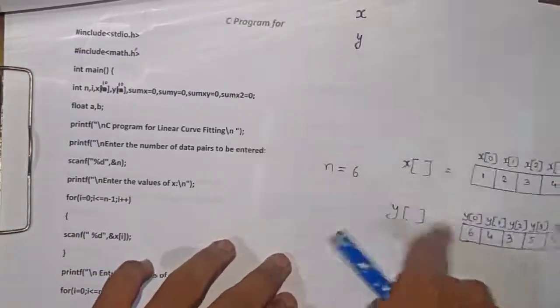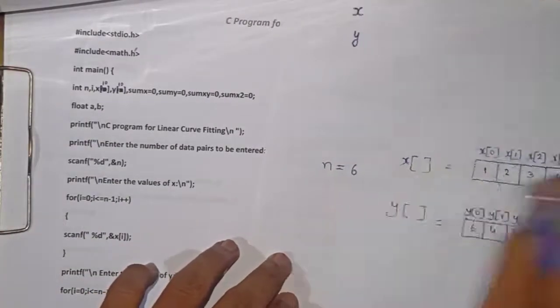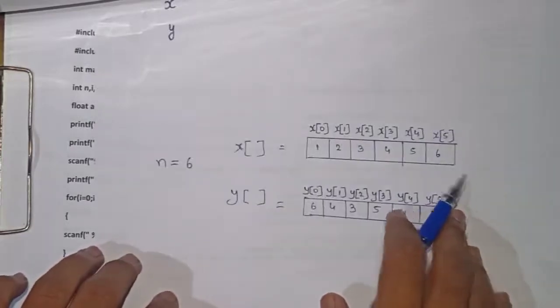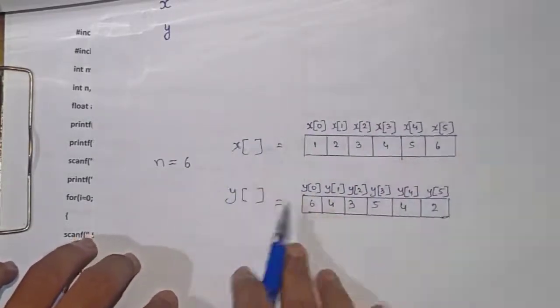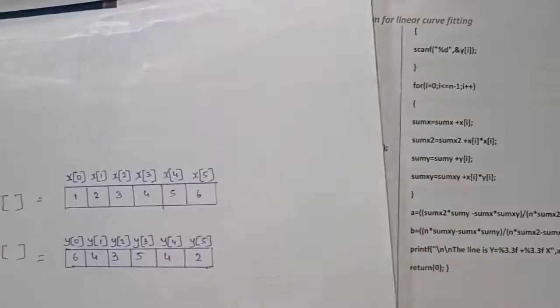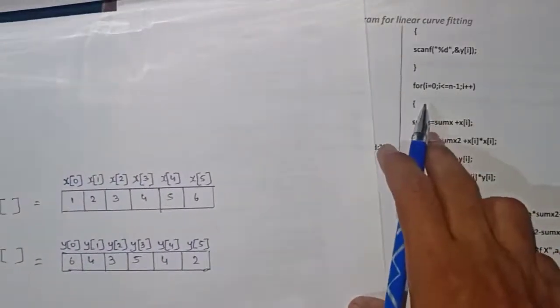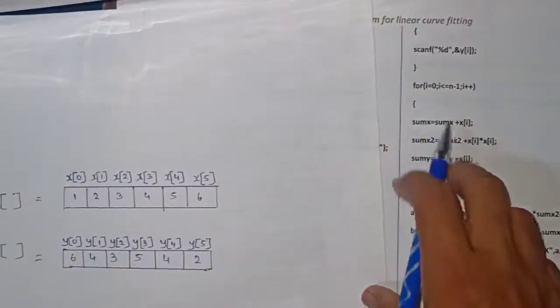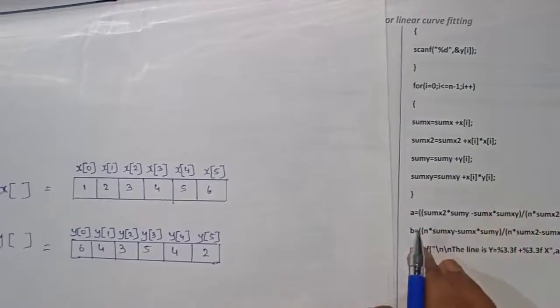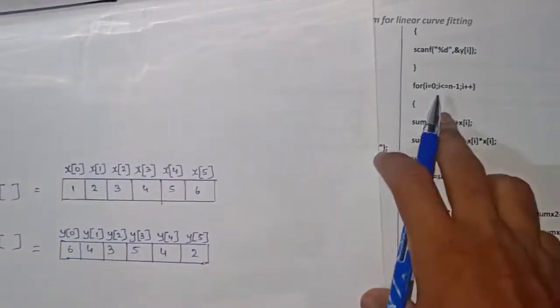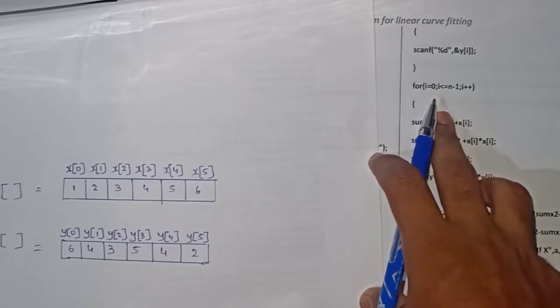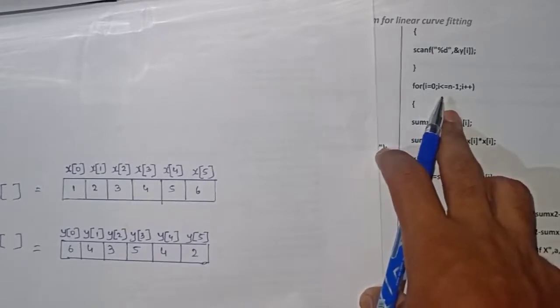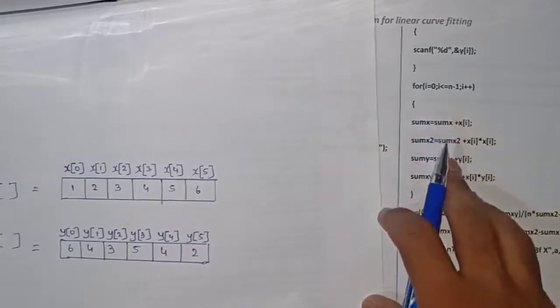Assume that we have entered n as 6, and we have read the values of x and y into arrays x and y. This next for loop is for calculating the values of summation of x, summation of x squared, summation of y, and summation of xy. Initially i is set to 0 and this for loop will be executed until i is less than or equal to n-1.